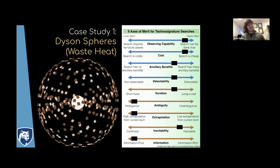I'm going to jump right into three case studies to show how to apply these axes of merit. The first one is something that was brought up in the previous talk, which is the idea of a Dyson Sphere or Dyson Swarm. When you're doing these characterizations, you have to pick a specific method—you pick your technosignature and your method by which you're going to search for it. Here I'm going to think about specifically waste heat from Dyson spheres.